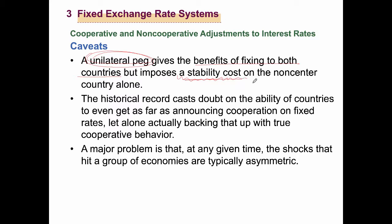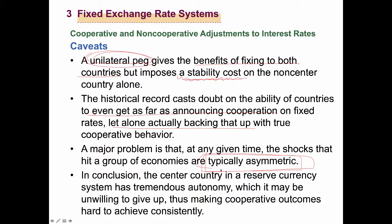The historical record casts doubt on the ability of countries to achieve cooperation. It was not even easy to announce that countries would cooperate, because they may have all different types of interests. Backing up an announcement of cooperation with true cooperative behavior was very difficult — it was hard even to get as far as announcing cooperation. The major problem comes from the existence of asymmetry between different countries. In conclusion, the central country in a reserve currency system — the Nth currency country — has tremendous autonomy, whereas the non-center countries do not.